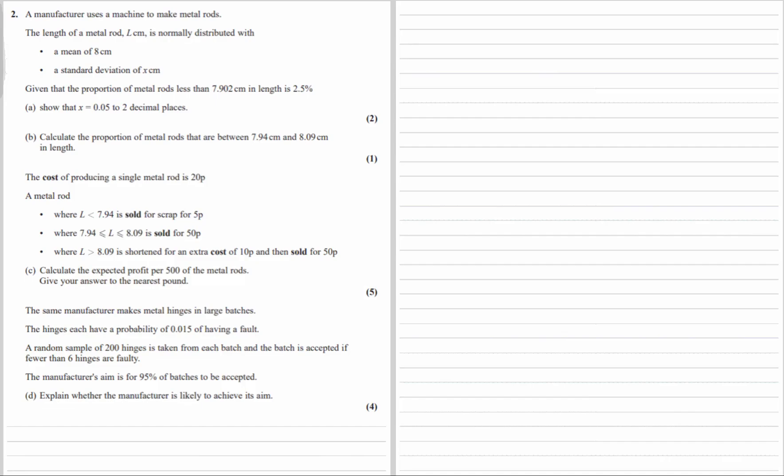A manufacturer uses a machine to make metal rods. The length of a metal rod, L cm, is normally distributed with a mean of 8, standard deviation of x, and we are given that the proportion of metal rods less than 7.902 cm is 2.5%, and we just show that x is 0.05 to 2 decimal places.